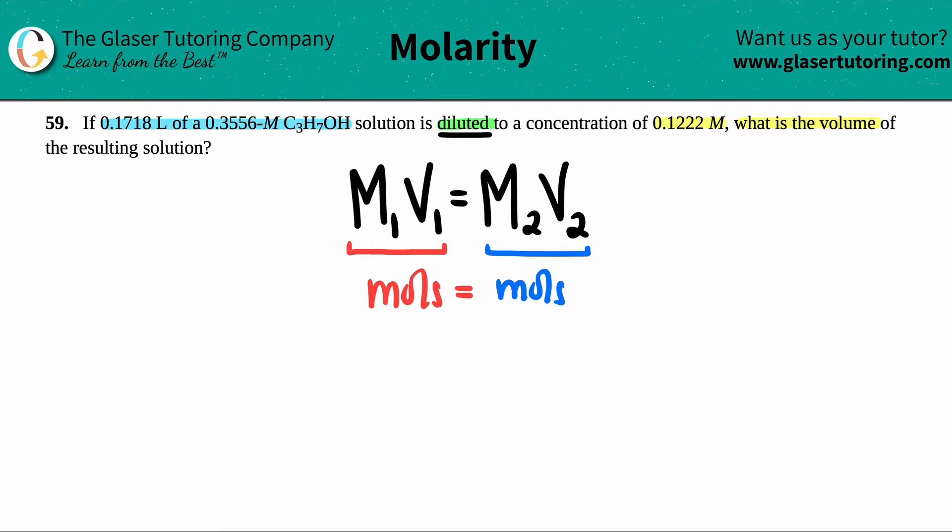The molarity can change, the volumes can change because you're adding water, but the moles cannot change. So that's why this formula is set up like this. Now we just have to find the pairs. Finding the pairs is easy.